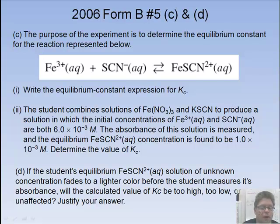Here's another sample problem. Equilibrium constant for the reaction. In this one here, you want to define the equilibrium constant expression. So you write the K expression. Part two, we've got the concentrations, the initial concentrations, and the absorbance of the solution. So that's at equilibrium. From this, you want to find the Kc. And then if the student's equilibrium solution of unknown concentration fades to a lighter color before the student measures its absorbance, what will happen to the value of K? Will it be too high, too low, or unaffected? And justifying that answer. So you've got the lab basis brought into this question. You also have equilibrium put into it as well.